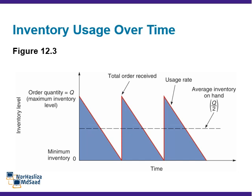With these assumptions, the graph of inventory usage over time has a sawtooth shape, as in Figure 12.3. Q represents the amount that is ordered. If this amount is 500 dresses, all 500 dresses arrive at one time, so the inventory level jumps from 0 to 500 dresses. In general, the inventory level increases from 0 to Q units when the order arrives. Because demand is constant over time, inventory drops at a uniform rate. Each time inventory is received, the level again jumps to Q units, and this process continues indefinitely.